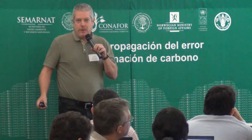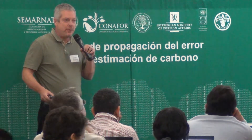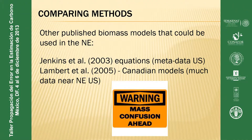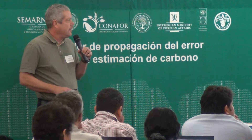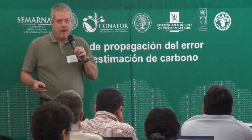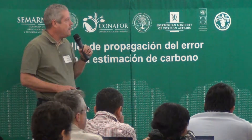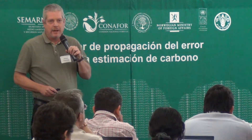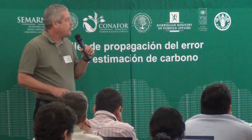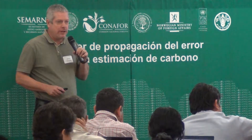One thing you could do is look at other models applicable to the region and see which are close to your methods. We could use the popular Jenkins equations, which were applicable to the entire U.S. Our friends to the north, the Canadians, published their models in 2005 as national equations, but their data distribution includes quite a bit from Quebec and Ontario - reasonably close to the northeastern U.S. - so we could at least take a look at those.